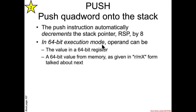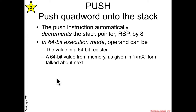In 64-bit execution mode, there are a couple different versions of push. The first is that you can push the value from a 64-bit register. The second is you can push a 64-bit value from memory, where the memory is given in a special form called RMX. There's also a version that can push a 32-bit immediate constant value, but that involves complicated exceptions, so we'll intentionally ignore that version for now.